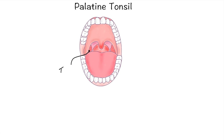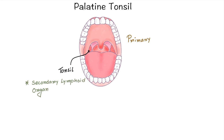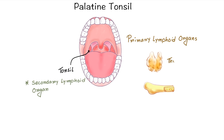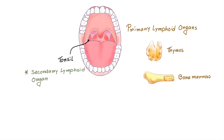Today we are going to discuss about palatal tonsils. Commonly it is called as tonsil and occasionally called as fascial tonsil. Tonsils are secondary lymphoid organs. As we know that the primary lymphoid organs are thymus and bone marrow. Tonsils maintain mature naive lymphocytes and initiate an adaptive immune response, so basically they are part of the adaptive immune system.